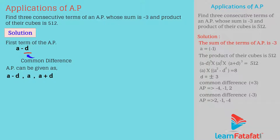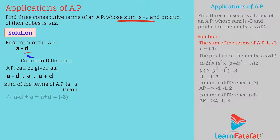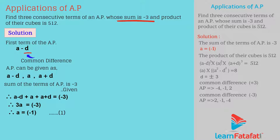According to the given conditions, the sum of the terms of the AP is minus 3. Therefore, (a minus d) plus a plus (a plus d) is equal to minus 3. Therefore, 3a is equal to minus 3. Therefore, a is equal to minus 1. This is equation 1.